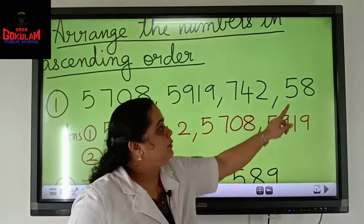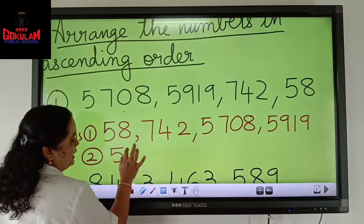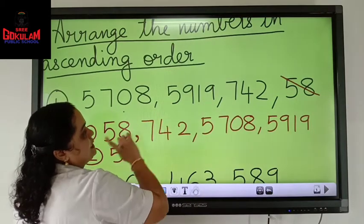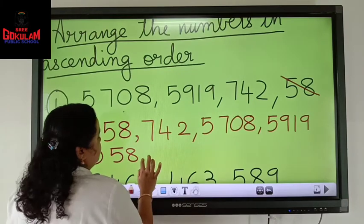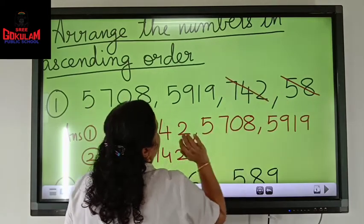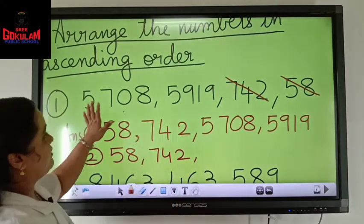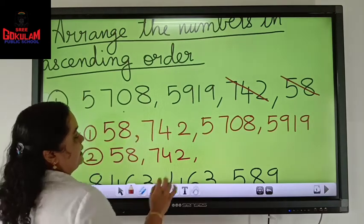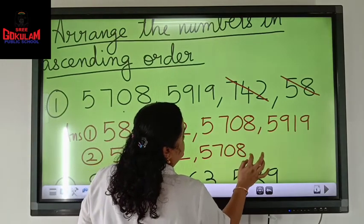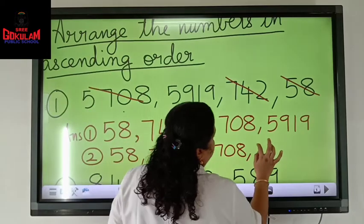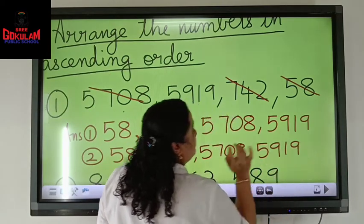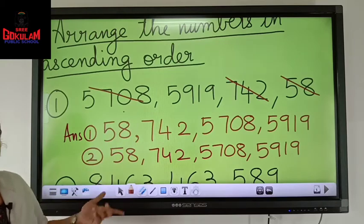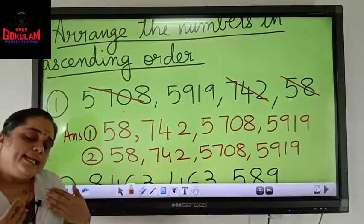One more second method is there for all of you. For example, you came to know 58 is the smallest. So you write 58 and then you cut 58. After that, you consider the remaining numbers. The next bigger number is 742, so you cut 742. Again, next bigger number — among these, it's 5000-something, so you go for the hundreds place: 708 and 919. So 708, which gives 5708. And then you will get the last number, 5919. You can just cut the number you have already selected, or you can directly go. Both methods are useful — any one method you can select.